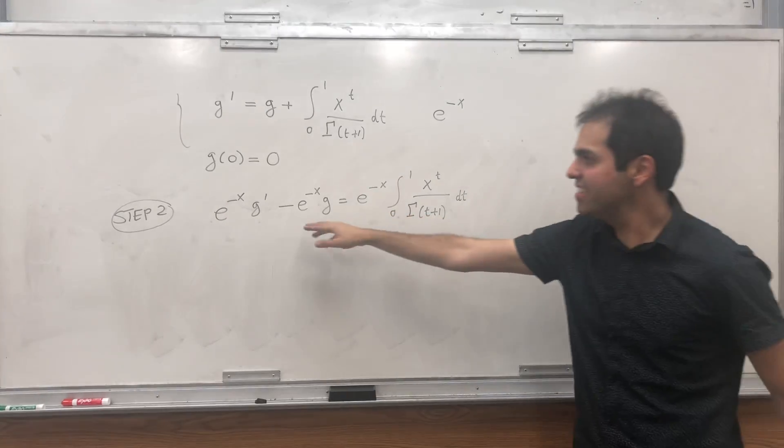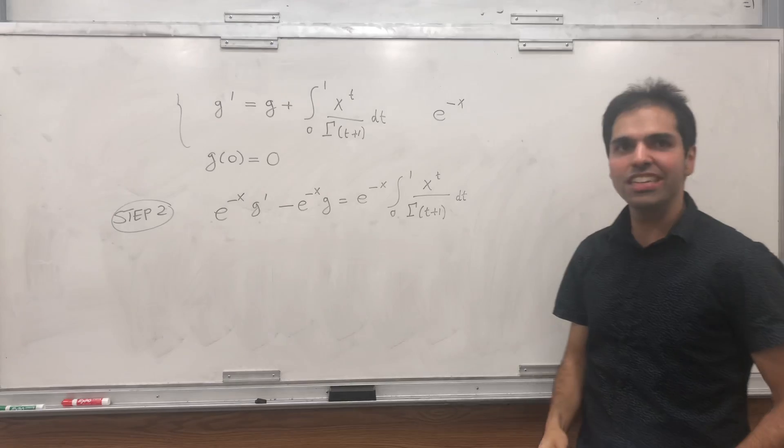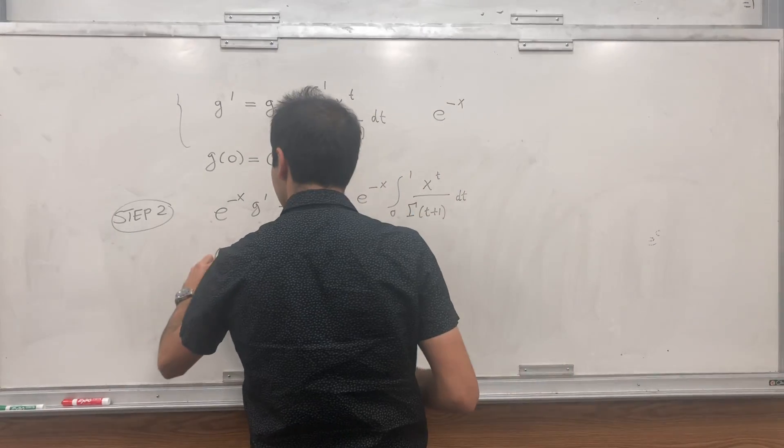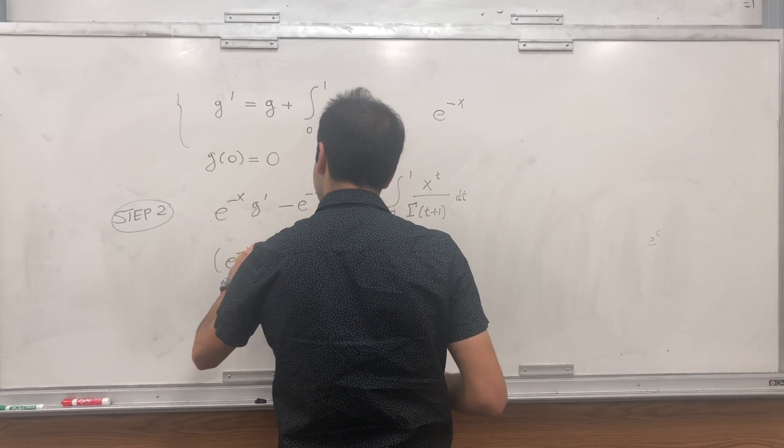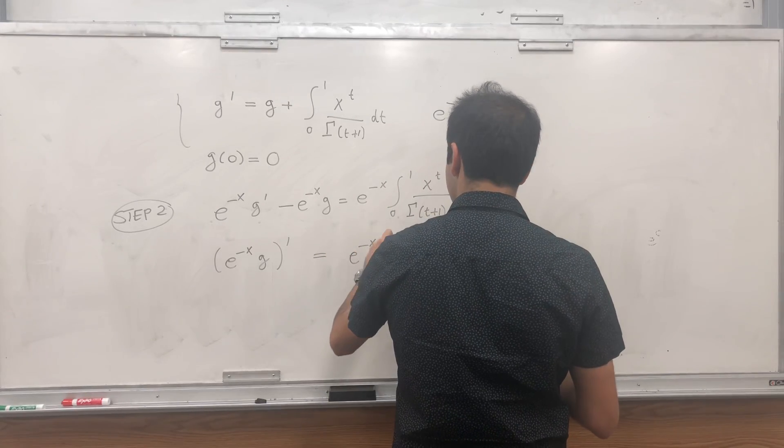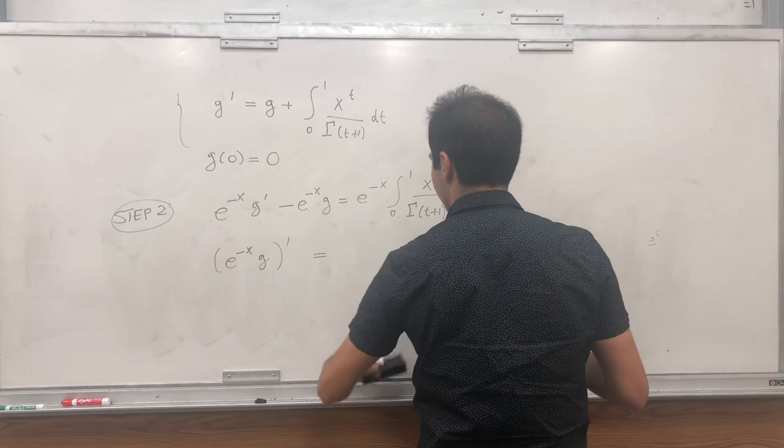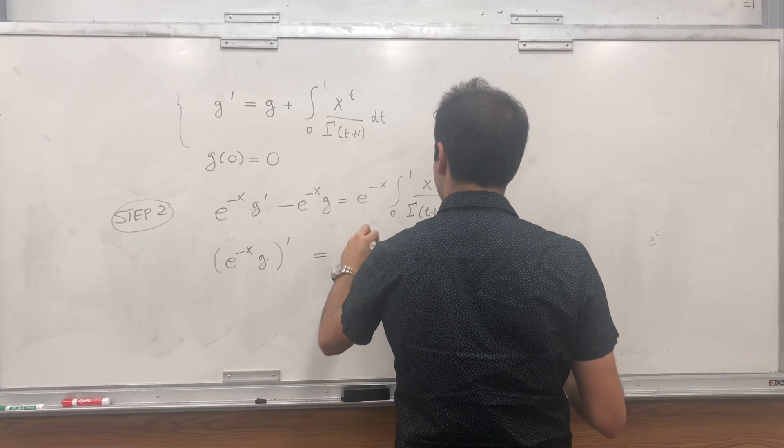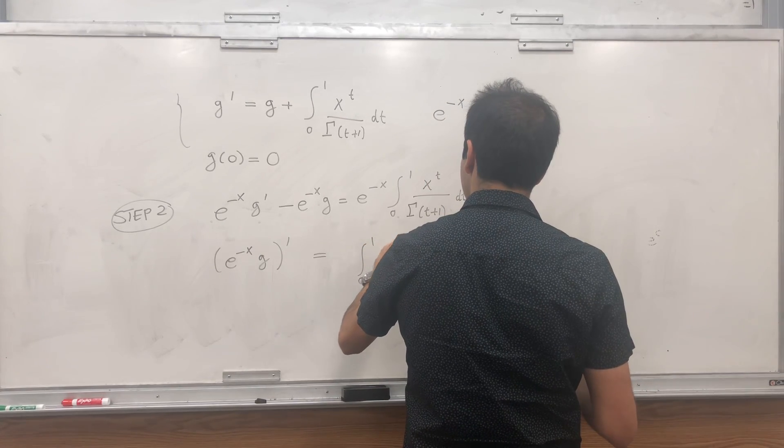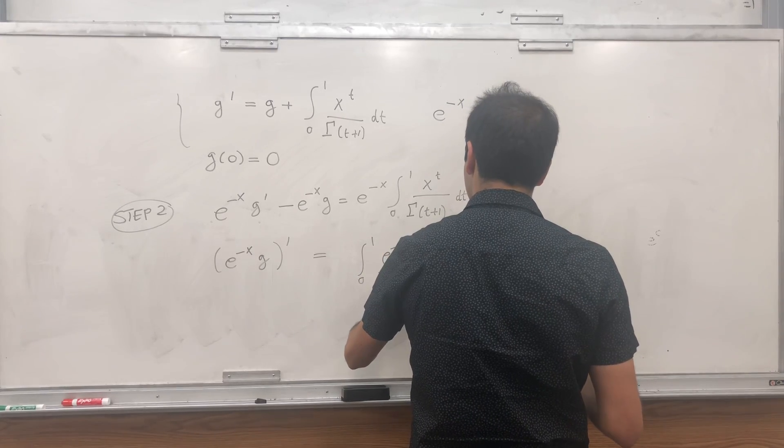But the nice thing is you can recognize this as the product rule. So this is actually a derivative, namely the derivative of e to the minus x g equals to e to the minus x integral. I guess let's just put it inside. You'll see why we do that. So integral from 0 to 1, e to the minus x, x to the t, over gamma of t plus 1 dt.